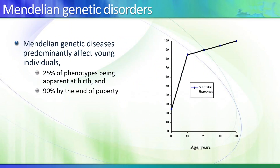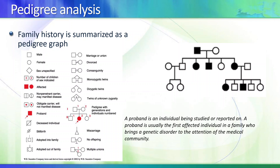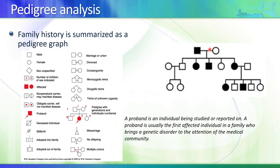Mainly, symptoms for Mendelian genetic disorders appear early in life during the first 10 years; some appear later in life. Specifically, 9% appear by the end of puberty. The way we represent these Mendelian disorders is by a pedigree. What you see to the right is a pedigree.